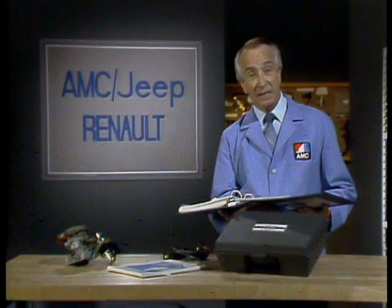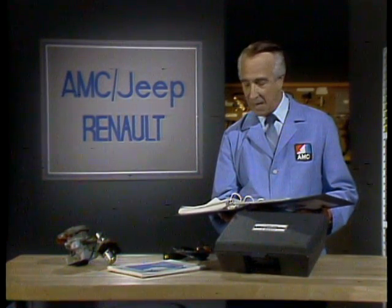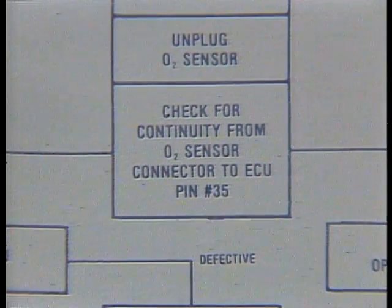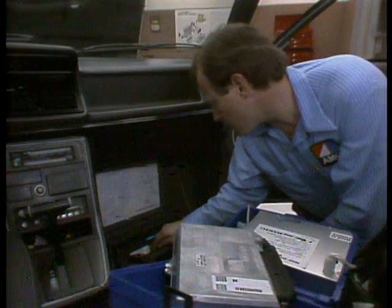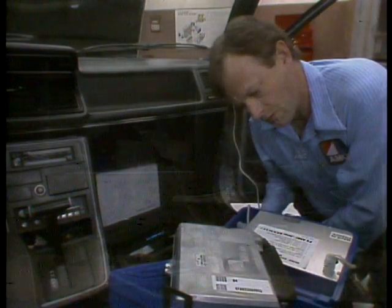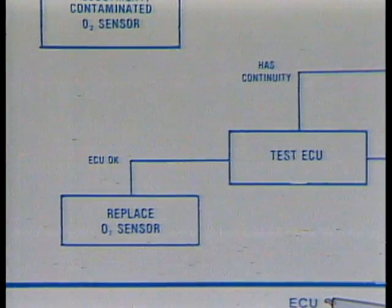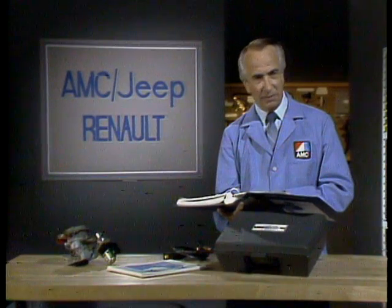We turn the engine off and unplug the ECU and the O2 sensor. Use the wiring harness illustration for the fault you're working on to identify which component is which. The next step is to test for continuity between the O2 sensor connector and pin number 35 on the ECU connector. We have continuity, so it says to test the ECU. The Renix systems use an adapter for this. The ECU tested out fine — that's generally the case — which means the O2 sensor is bad and should be replaced. Another vehicle test is necessary to confirm everything is in order.